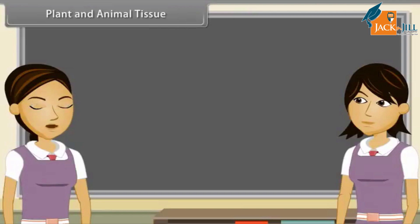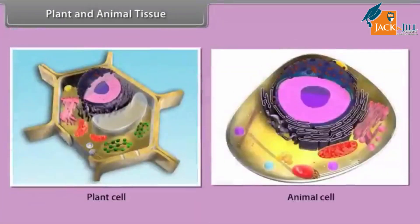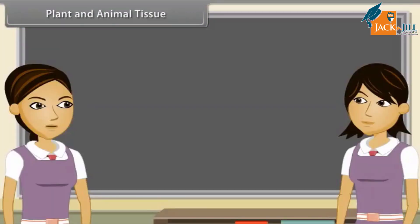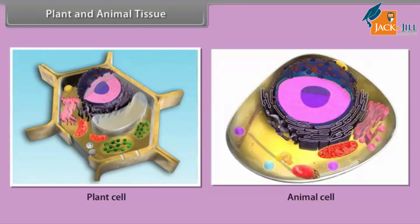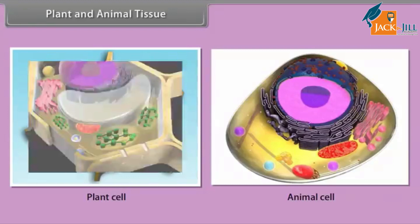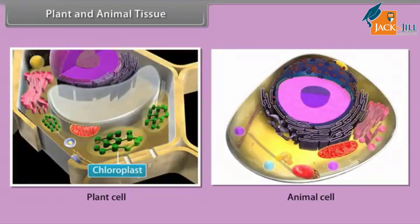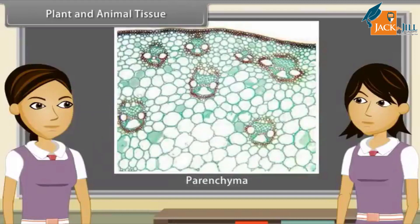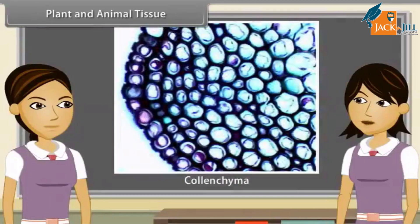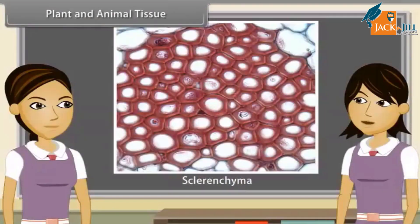Plants and animals both are living organisms, but their internal structures are entirely different. One major difference is that plants are autotrophic — they can make their own food in the presence of sunlight, carbon dioxide and water with help of chloroplasts. They are fixed at one place, so the tissues in plants are mainly of such types which give them strength. Some of them are also dead tissues which give mechanical strength.